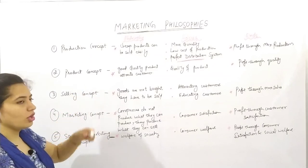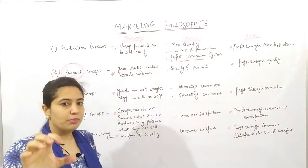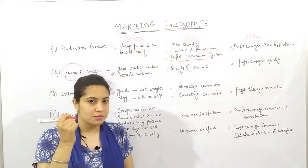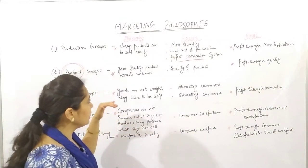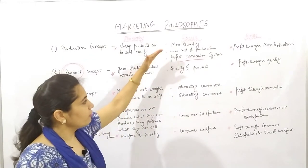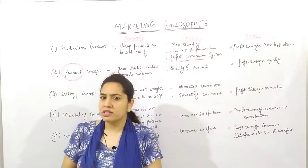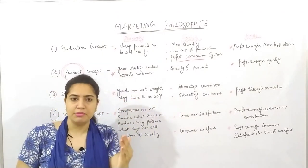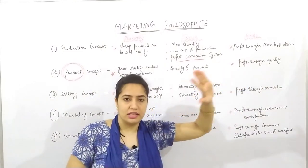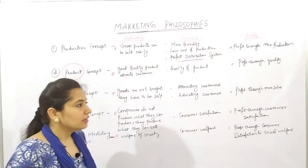Next is the Product Concept. As the name suggests, the focus was on the product. When companies were making and selling products in the market, the consumer was smart and quality-conscious. So they thought good quality products should be made because quality attracts customers. Their focus was on the quality of the product — if you focus on quality, your sales will be more. Their end was profit through quality: good quality means good sales and good profits.